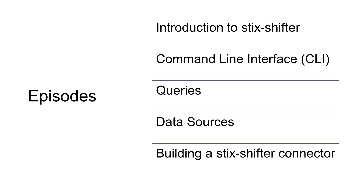Here is a listing of the other videos in this series. Introduction to Stick Shifter — that's this video. The command line interface, where we show you how to prepare your environment, install Stick Shifter, and run a query to verify your data sources are available. Queries, where we demo basic queries that can be run from the Stick Shifter CLI. Data sources, which covers the current connectors and walks you through the information you'll need to start collecting on your particular data source if you're thinking about building a connector. And finally, building a Stick Shifter connector, covering the steps needed to create your own connector.